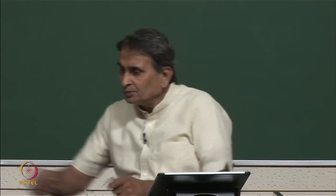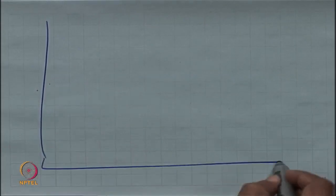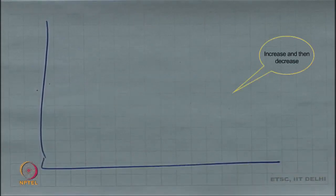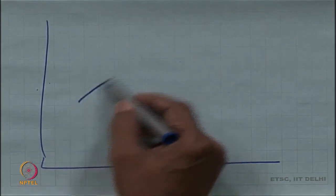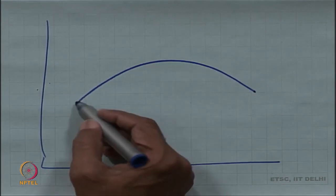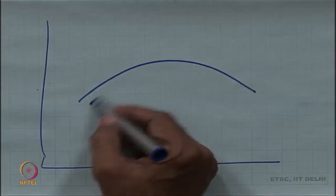Any guesses? What would happen if the level of twist is changed? Up to a certain extent it increases and then decreases. This will increase and then decrease — now why does it increase and why does it decrease? The increase is because the number of helices are increasing and therefore the initial increase is there.